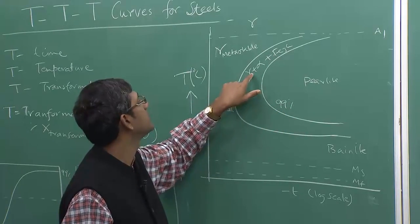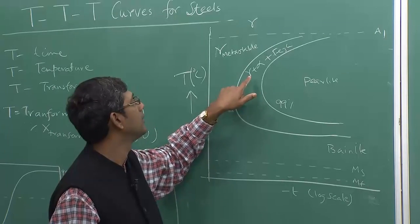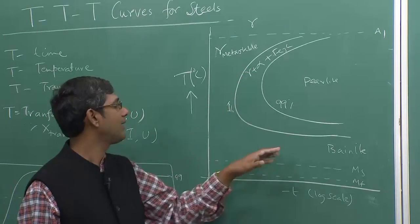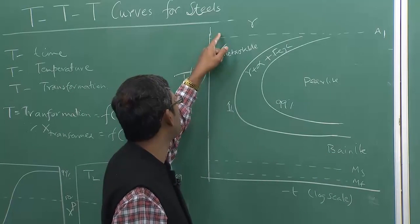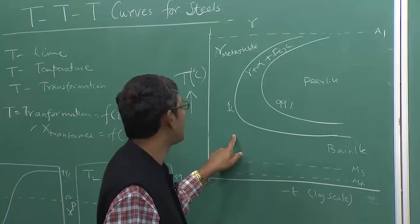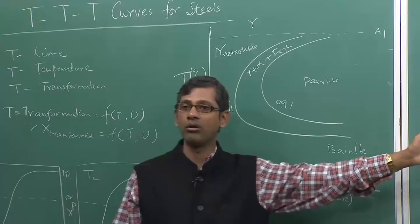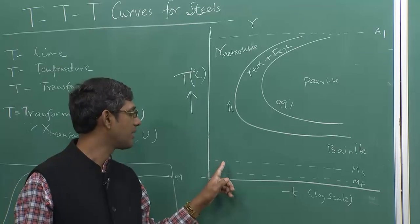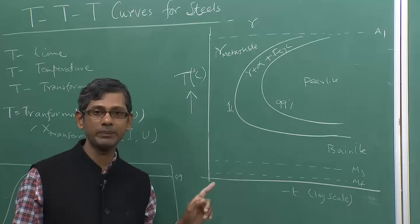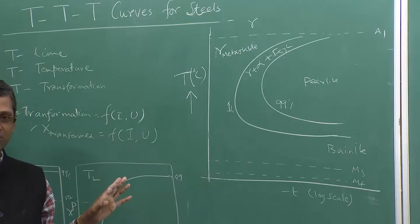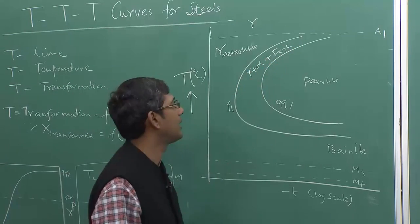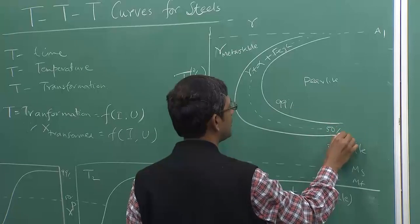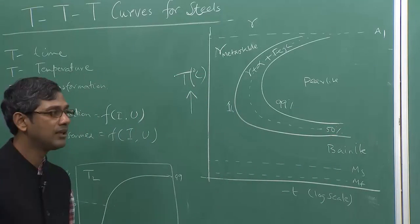In between the two C-curves some amount of gamma will be retained, that is why it is called gamma plus alpha plus Fe3C. Then bainite is present at lower temperatures because bainite transformation happens if you quench the steel to about 350–400°C and hold it for a long time. If you quench the steel below MS temperature it will form martensite — martensite starts at MS temperature and ends at MF temperature. Sometimes a 50% transformation line is also plotted.